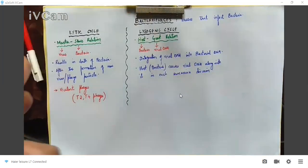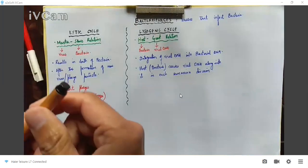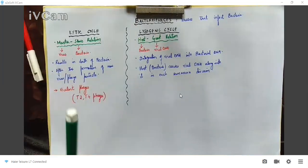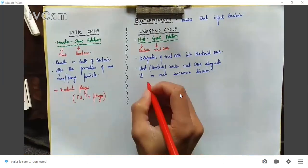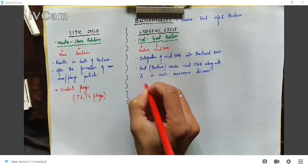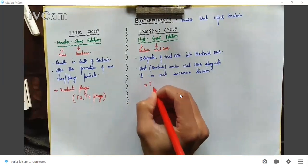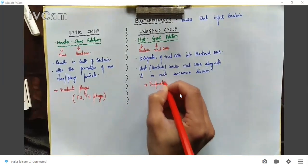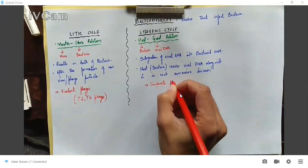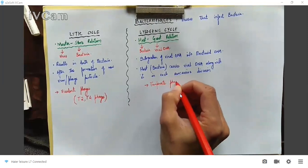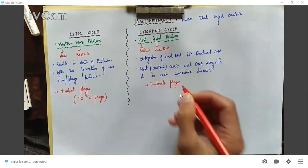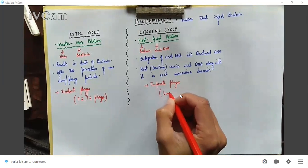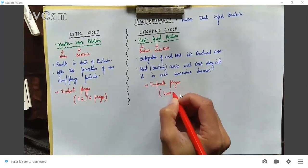This integrated viral DNA is called a prophage. The viruses that undergo the lysogenic cycle are called temperate phages. An example of a temperate phage is the lambda phage.